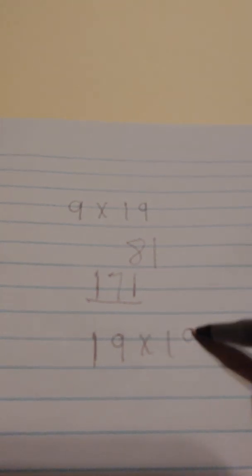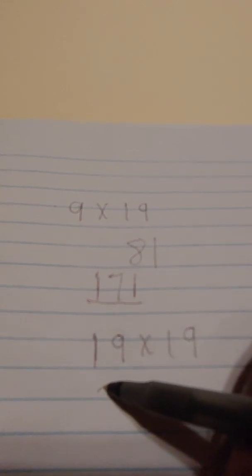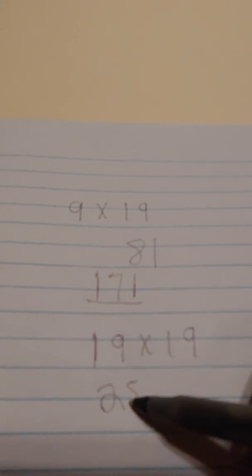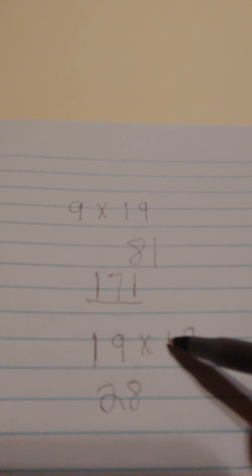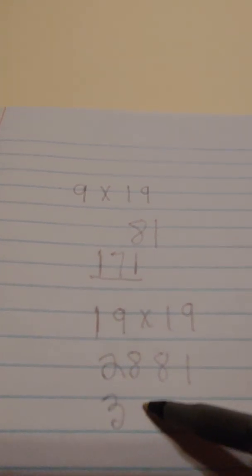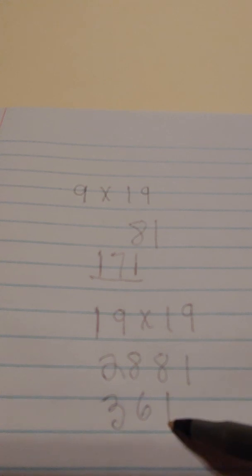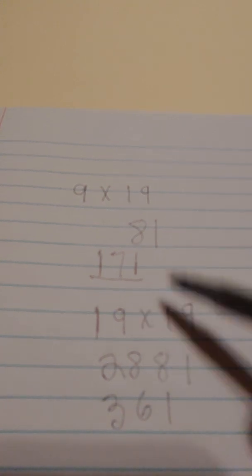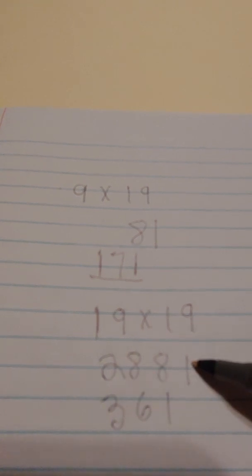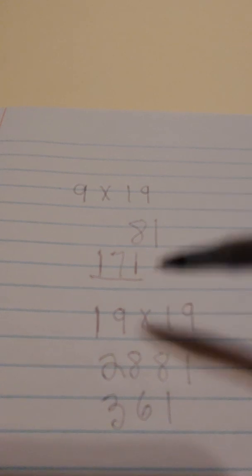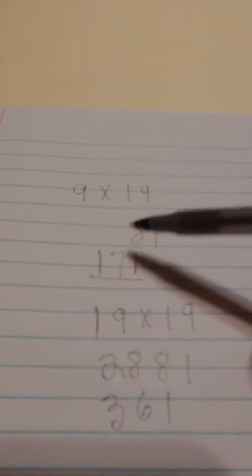And if you were going to do 19 times 19, again, the same thing. You take the 9 and add 9. It's going to be 28. And then you say 81. So the answer would be 361. Because if you added 8 to 28, it's going to be 36, 1 left over. So again, it takes more time to solve the problem, but it doesn't get complicated. It still is simplistic in its operation and its progression.